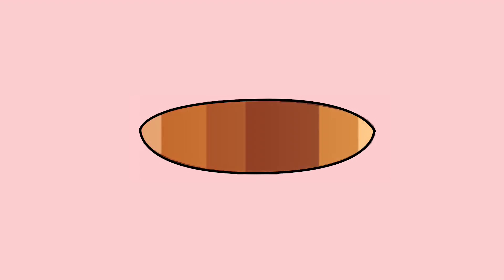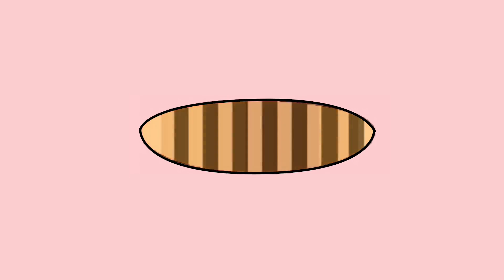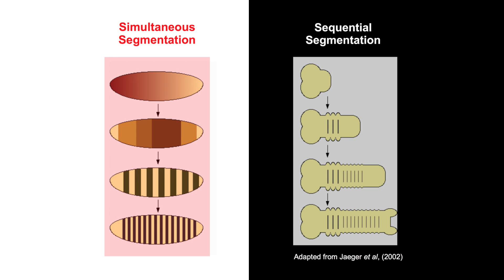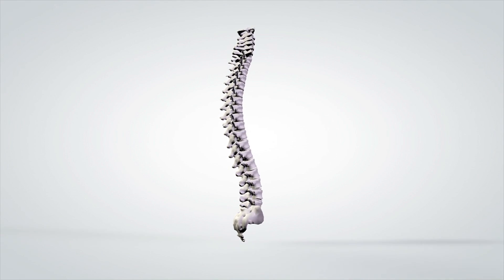The other way of making segments is to make them all at once, by simultaneously subdividing the entire embryo length. Even though these two ways of making segments are as different as can be, it seems quite easy for evolution to switch between one and another.